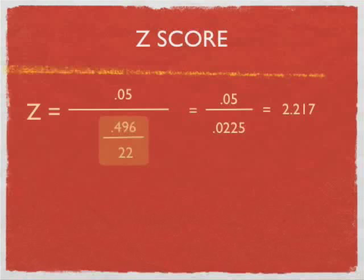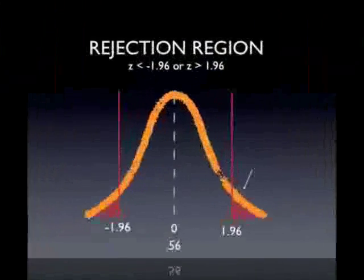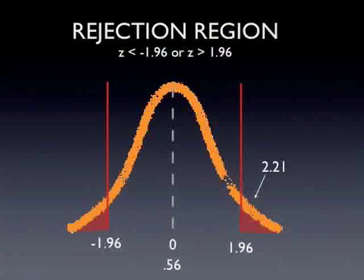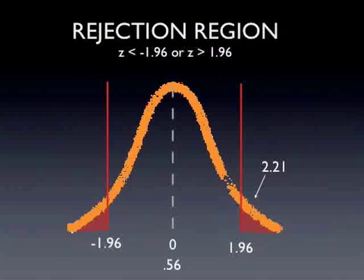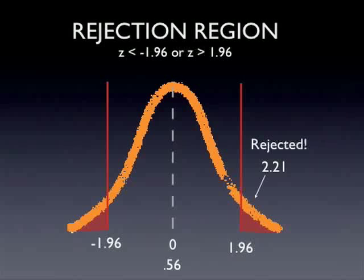Now, for the tricky part, go back to the slide. 2.21 is right there. So, the null hypothesis is rejected.